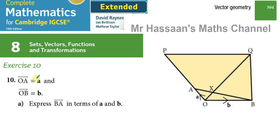I've already answered a few questions from this particular exercise. This is question number 10. It says the vector from O to A is denoted by A, and the vector from O to B is equal to vector B, as shown in the diagram. Vectors can be represented by a single lowercase letter, or by a directed line segment between two points with an arrow. So OA is vector A and OB is vector B. They're asking us to express the vector from B to A in terms of vectors A and B.